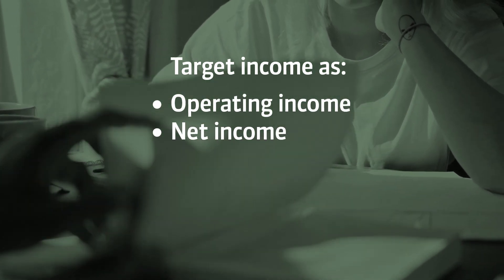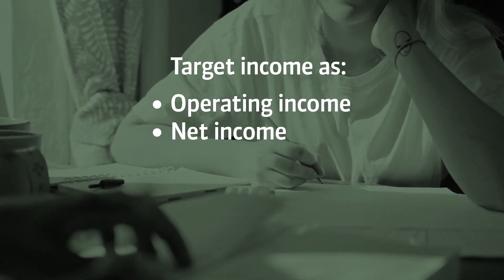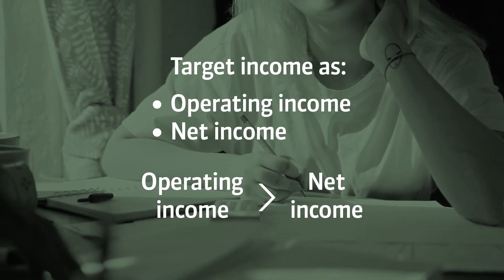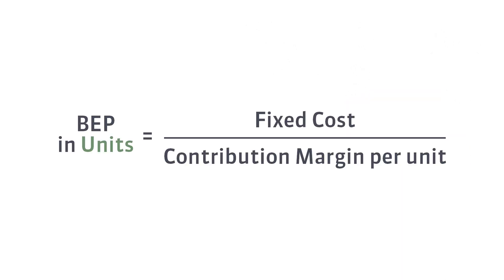The value of net income is lower than the operating income. Let's start to calculate the target income understood as operating income first. To do this, I will remind you of the formula we use to calculate the break-even point. This time we want our contribution margin to cover not only the fixed cost but also the value of the target income.